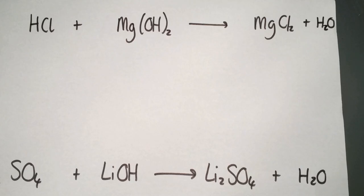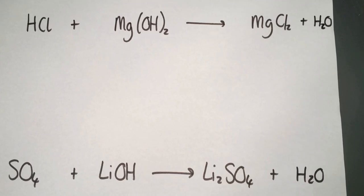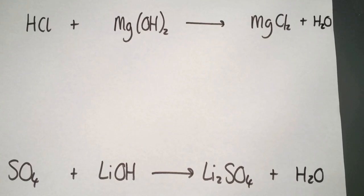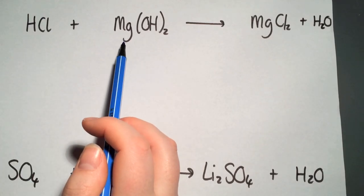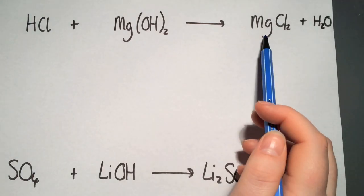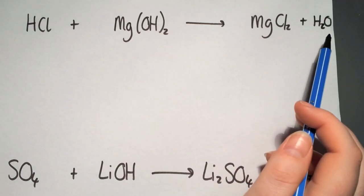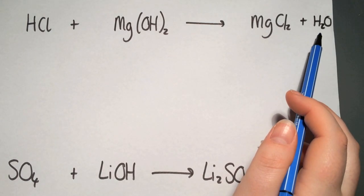A very common example of balancing equations is looking at acids and alkalis in neutralization reactions. In this example we have hydrochloric acid being reacted with magnesium hydroxide to give us magnesium chloride and water.